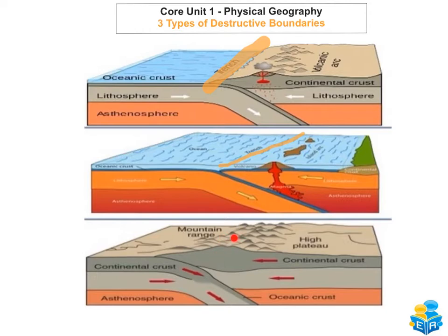With continental and continental crust collision, subduction doesn't really happen as much. One plate may be forced to subduct slightly, but both tend to hold their ground and cause each other to buckle up, forming really high fold mountains such as the Himalayas, where you have the world's biggest mountain — Mount Everest.